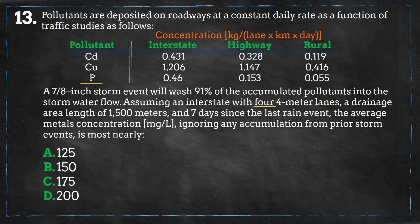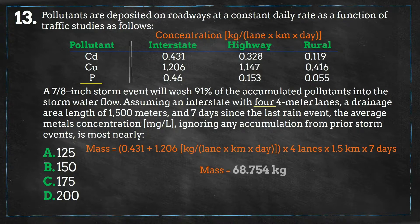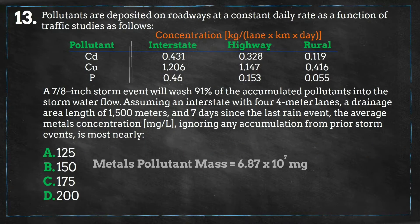So, we will combine the pollutant concentrations for cadmium and copper for an interstate and then multiply this combined concentration by the lanes, the length of drainage area, and the number of days since the last rain event and we get a total mass of 68.754 kilograms which is equal to 6.87 times 10 to the 7th power milligrams.